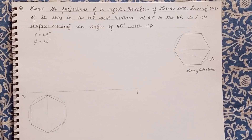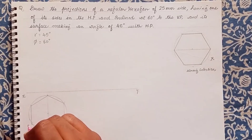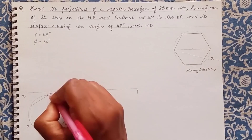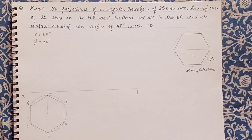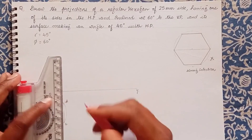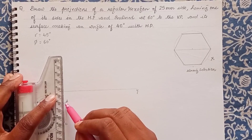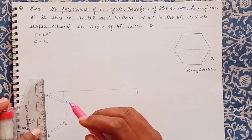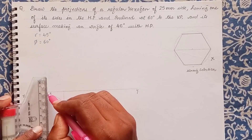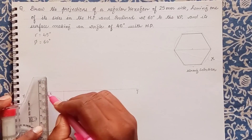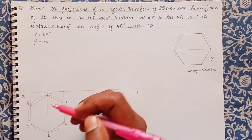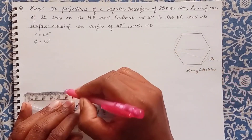Now it is labeling time. Label the corners A, B, C, D, E, and F. This is the top view showing the true shape of the hexagon. Now let us project it to get the front view. In the front, it will be an edge view that we obtain.